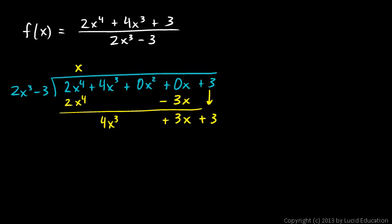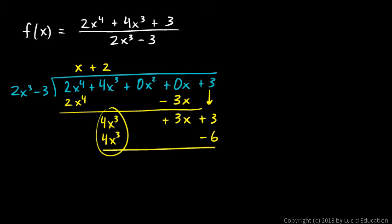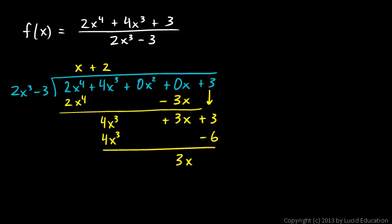Then we do it again. We look at the lead terms and ask: 2x cubed goes into 4x cubed how many times? What do we need to multiply 2x cubed by to get 4x cubed? The answer is 2, so that's a plus 2. We multiply 2 times the divisor and put the result down here and subtract. 2 times 2x cubed is 4x cubed, and 2 times minus 3 is minus 6. Subtracting: 4x cubed minus 4x cubed is nothing. 3x minus nothing is 3x. And 3 minus negative 6 is 9. Now we're done — 2x cubed will not go into 3x, so we're finished.